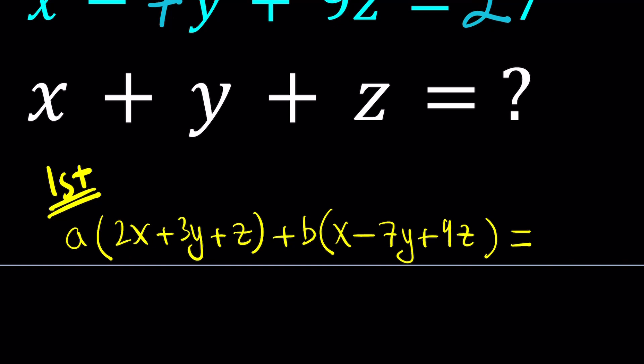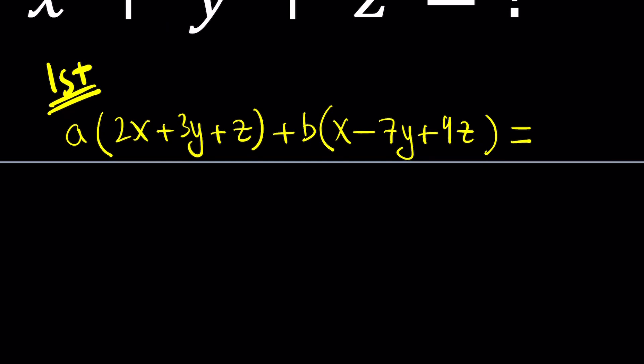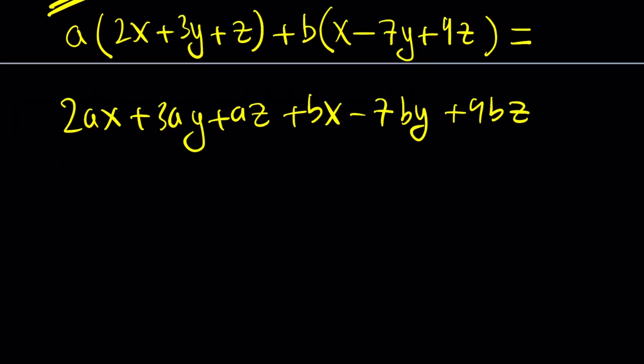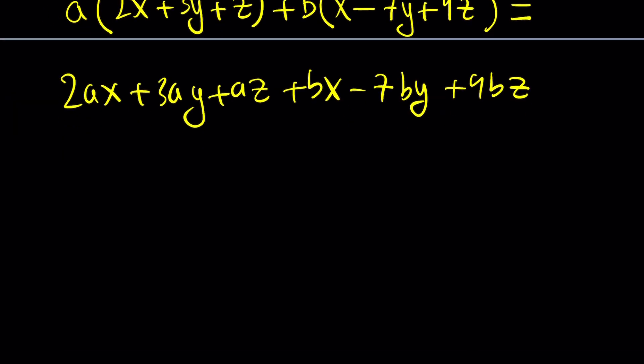First of all, I'm going to distribute. I'll be getting 2ax plus 3ay plus az plus bx minus 7by plus 9bz. Now, how can you turn this into something like x plus y plus z? First of all, let's combine like terms.